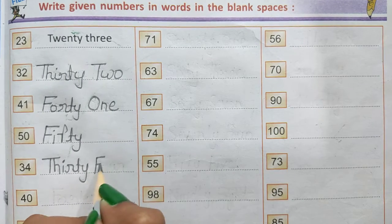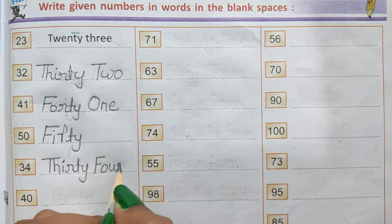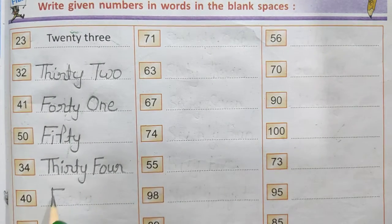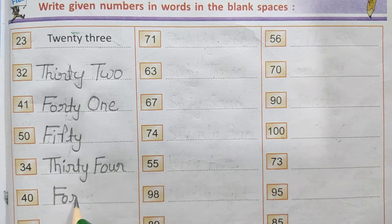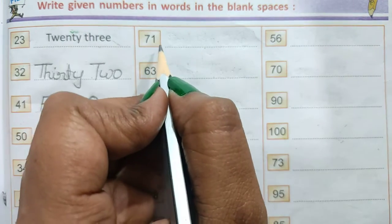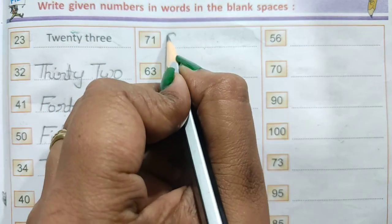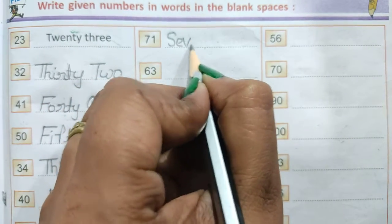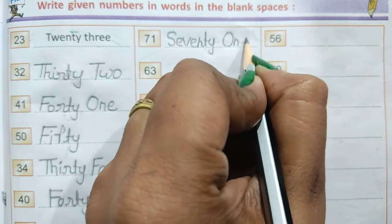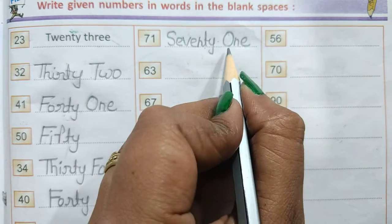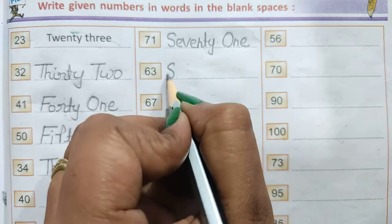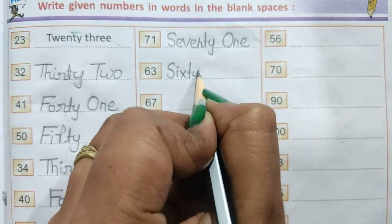34 = T-H-I-R-T-Y F-O-U-R, thirty-four. 40 = F-O-R-T-Y, forty. 71 = S-E-V-E-N-T-Y O-N-E, seventy-one. 63 = S-I-X-T-Y T-H-R-E-E, sixty-three.